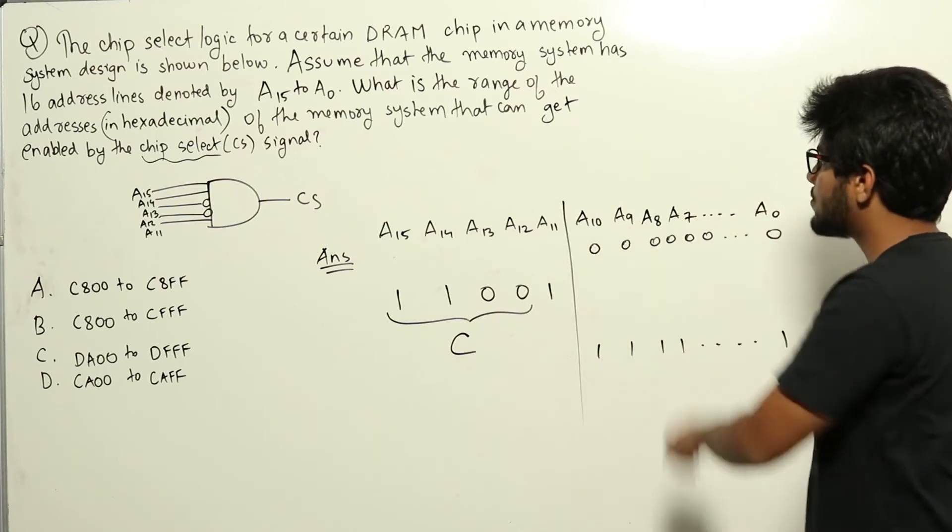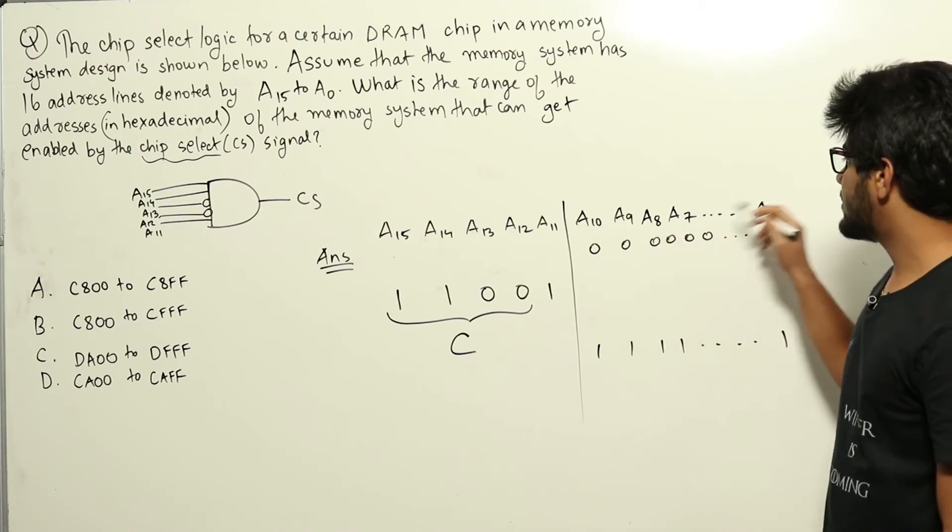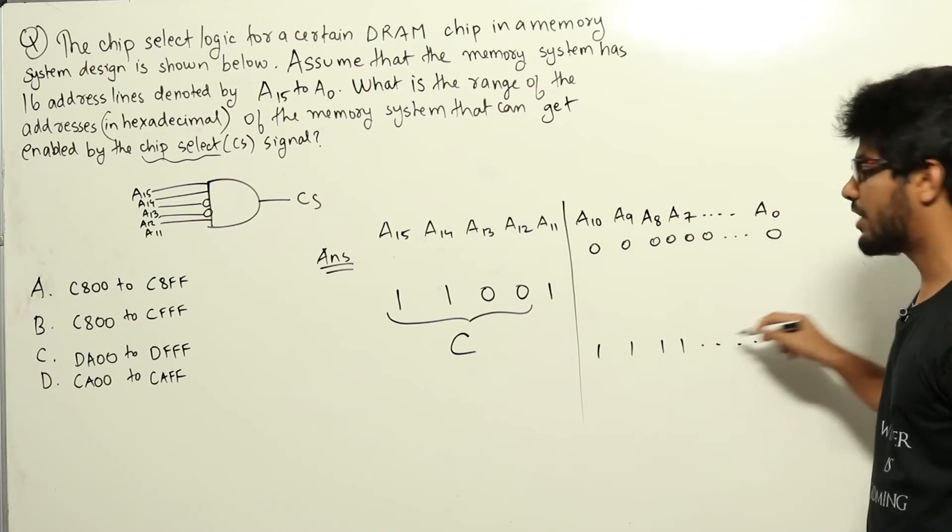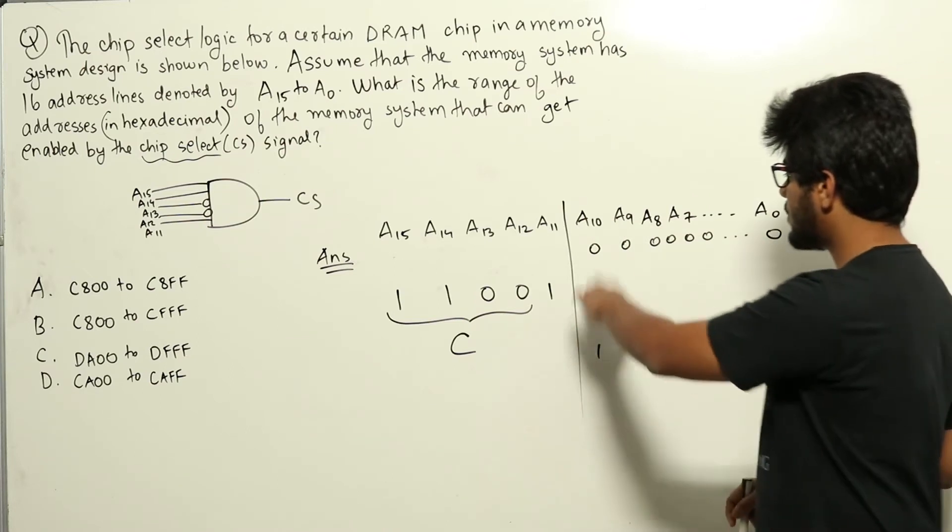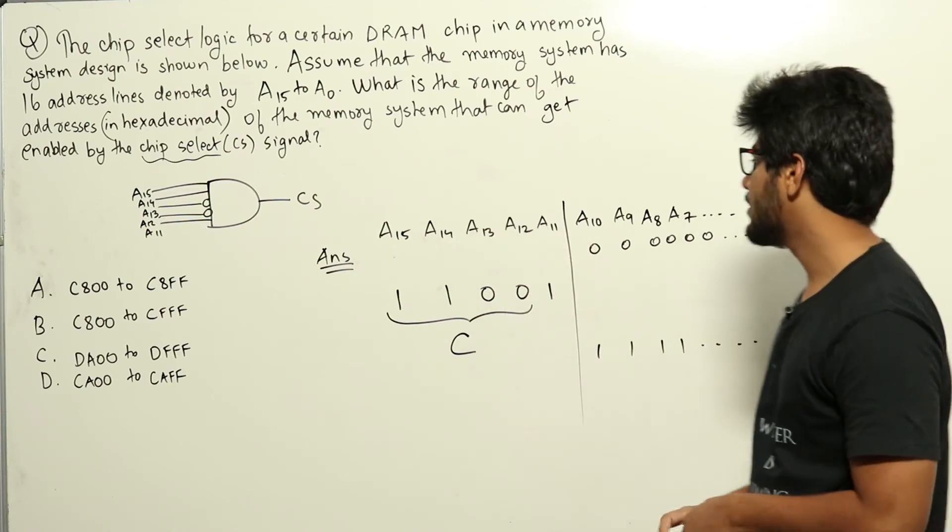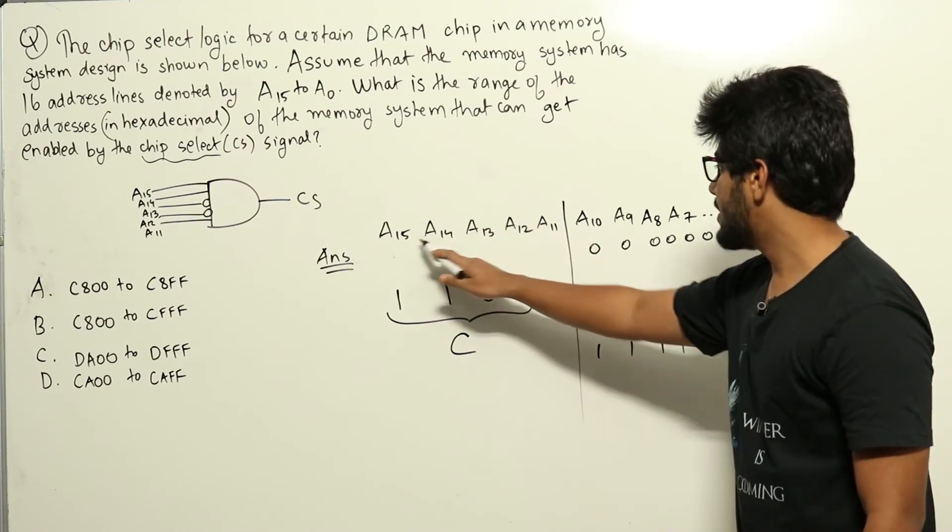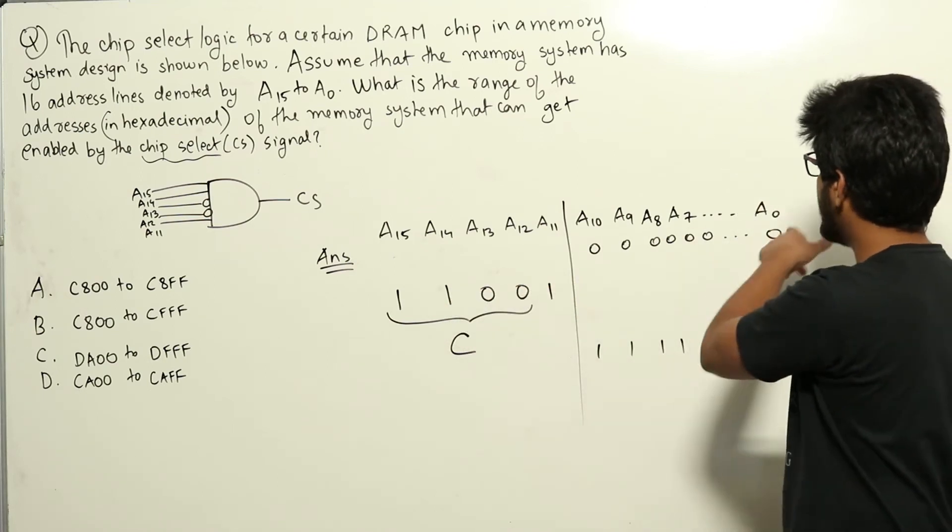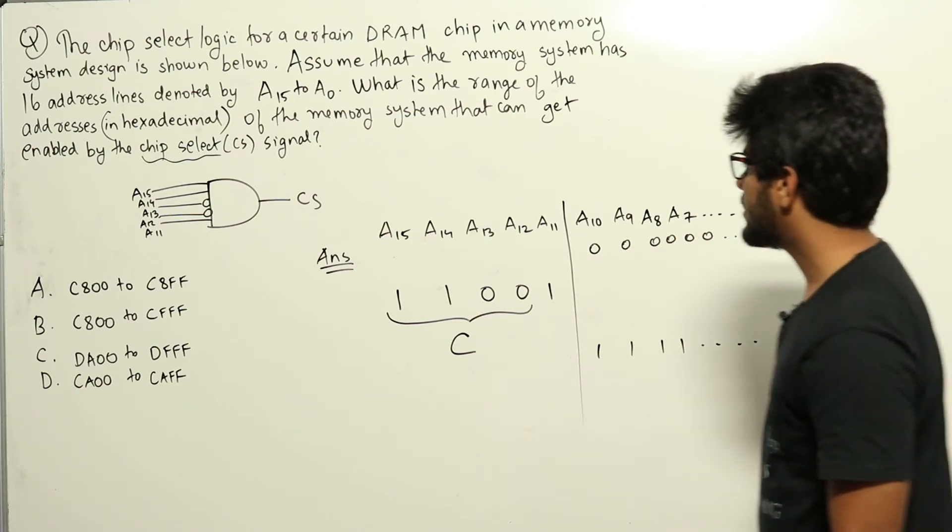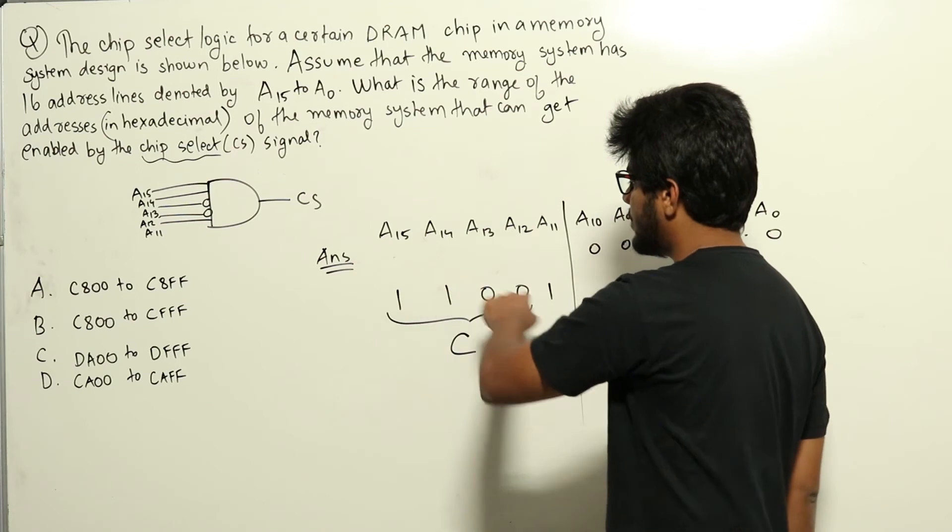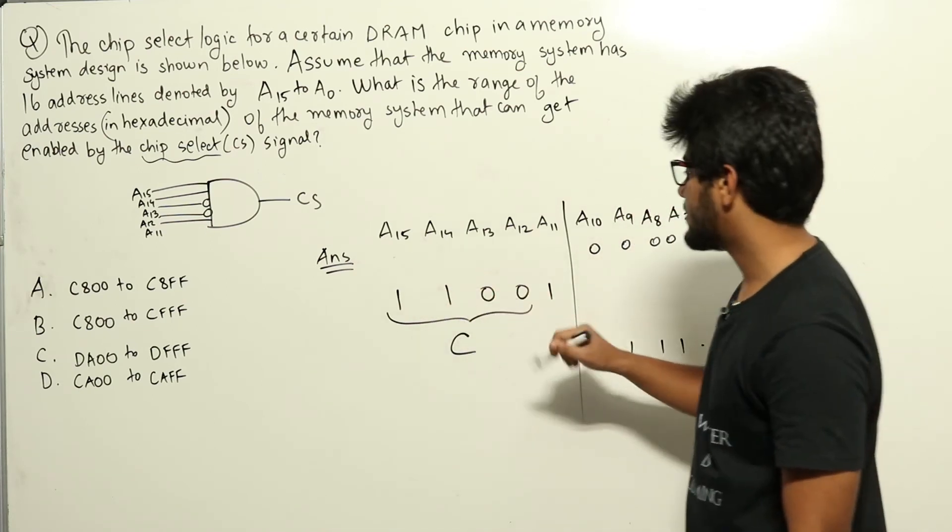Among that, the smallest value will be when A10 to A0 is all zeros, and the largest value will be when A10 to A0 is all ones. So whatever value comes in between, the CS signal will still be active. We will be keeping this at 11001, and when A10 to A0 is all zeros, we will see what the address will be. The address will be in hexadecimal, so we take four bits together and find out the hexadecimal digits.